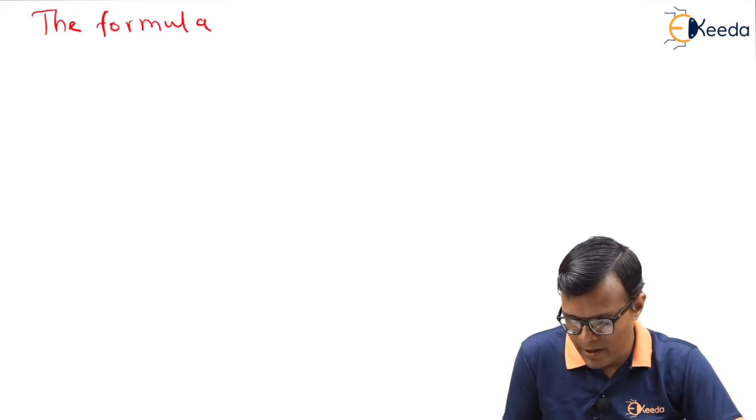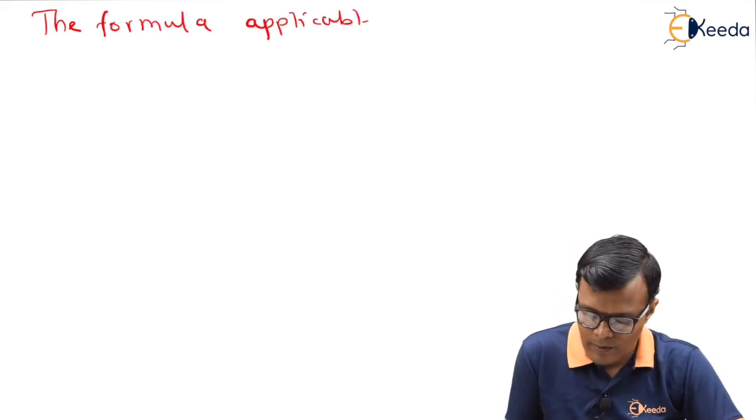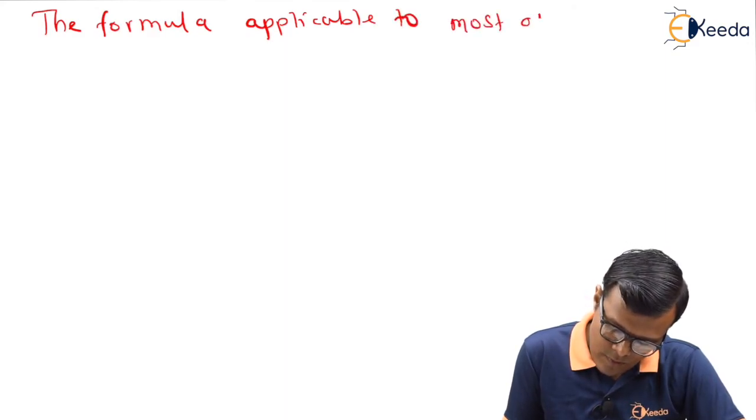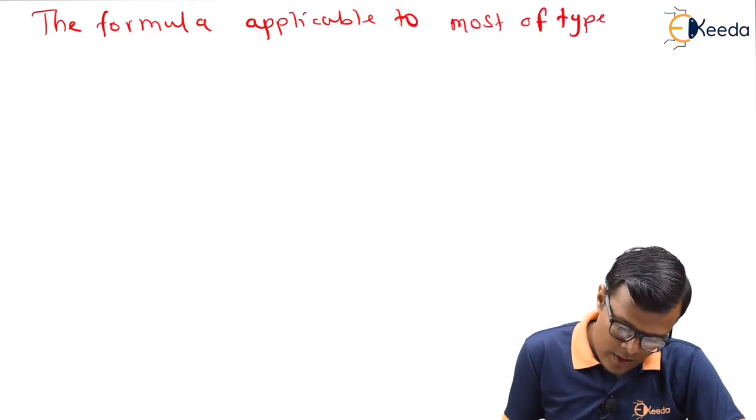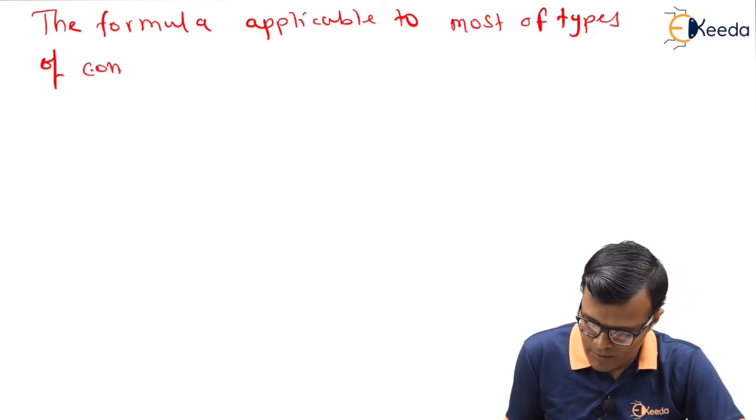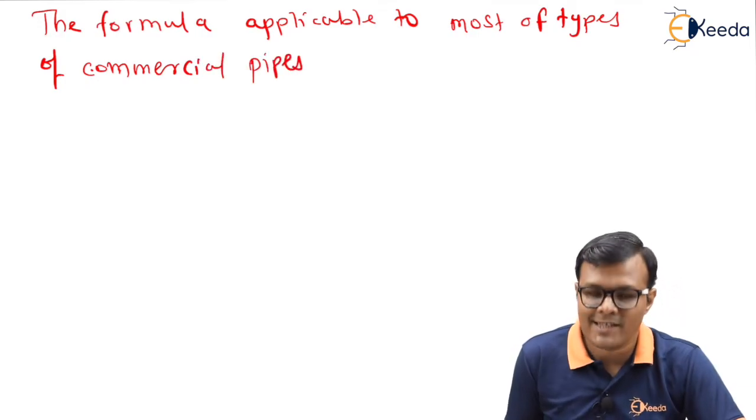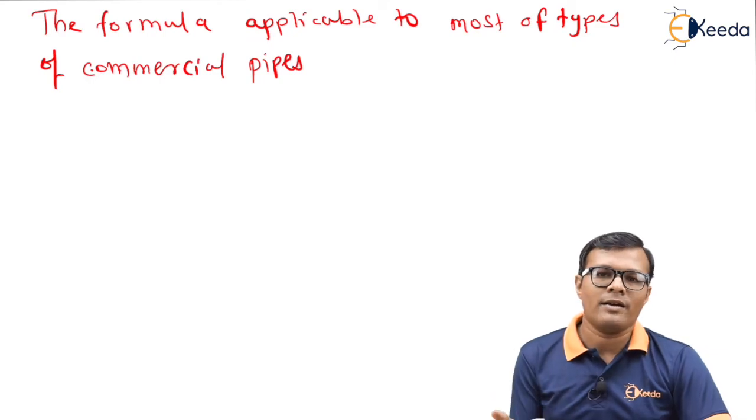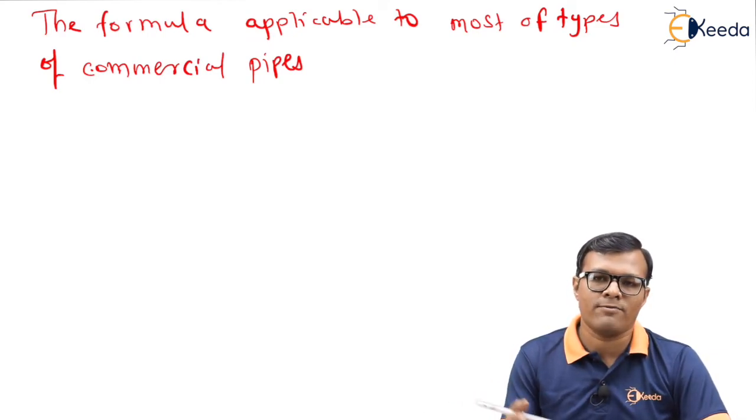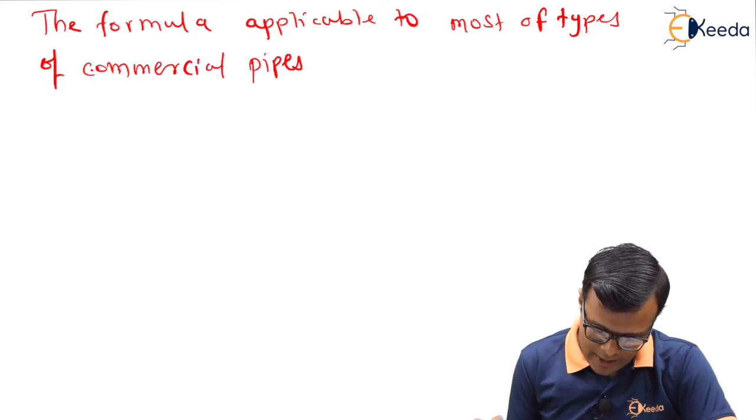So in case of commercial pipes, the formula applicable to most of types of commercial pipes is by semi-empirical equation. Empirical means we don't have any scientific base for that, and semi-empirical means we have some chances of scientific base for the formation of relation.